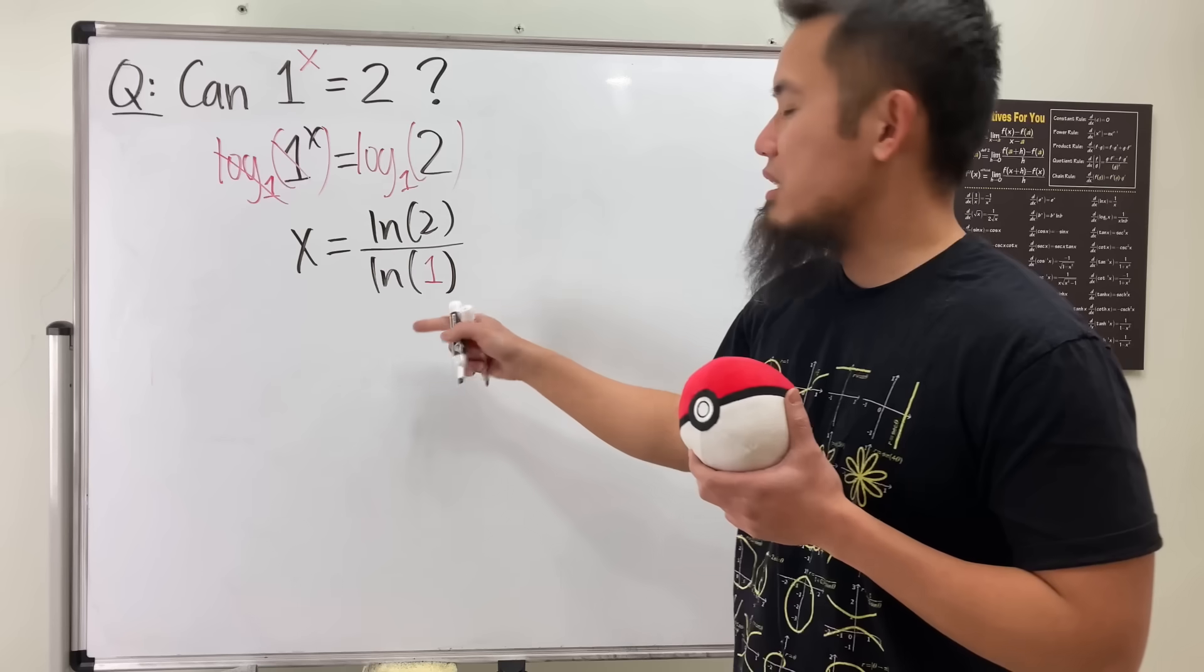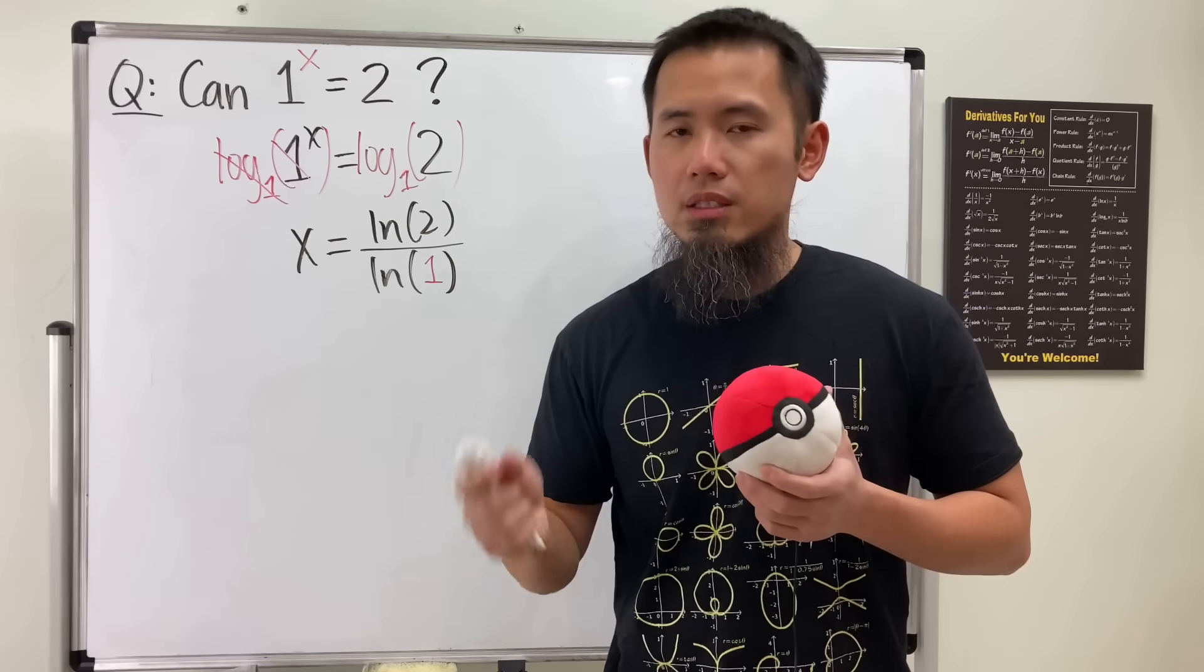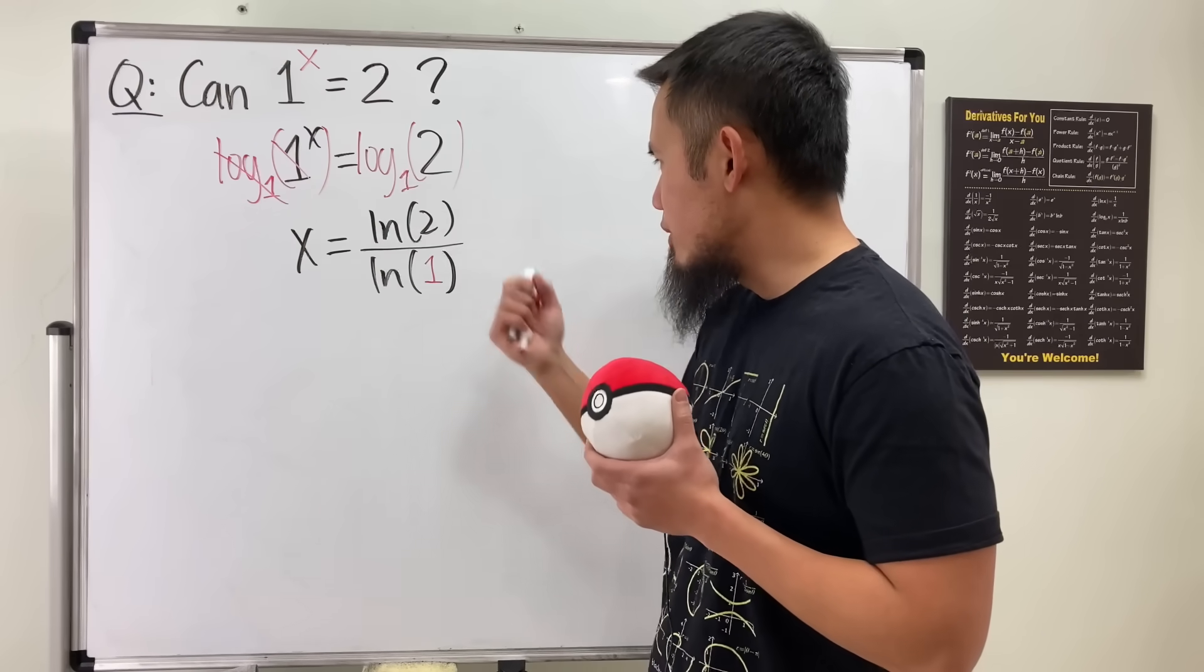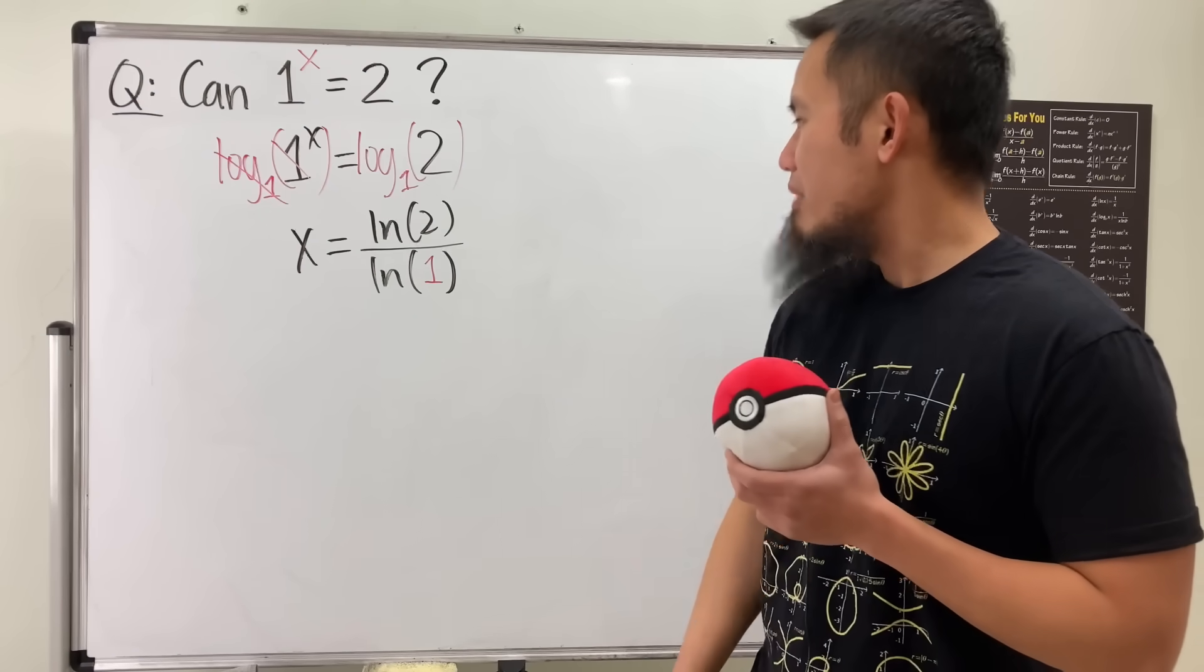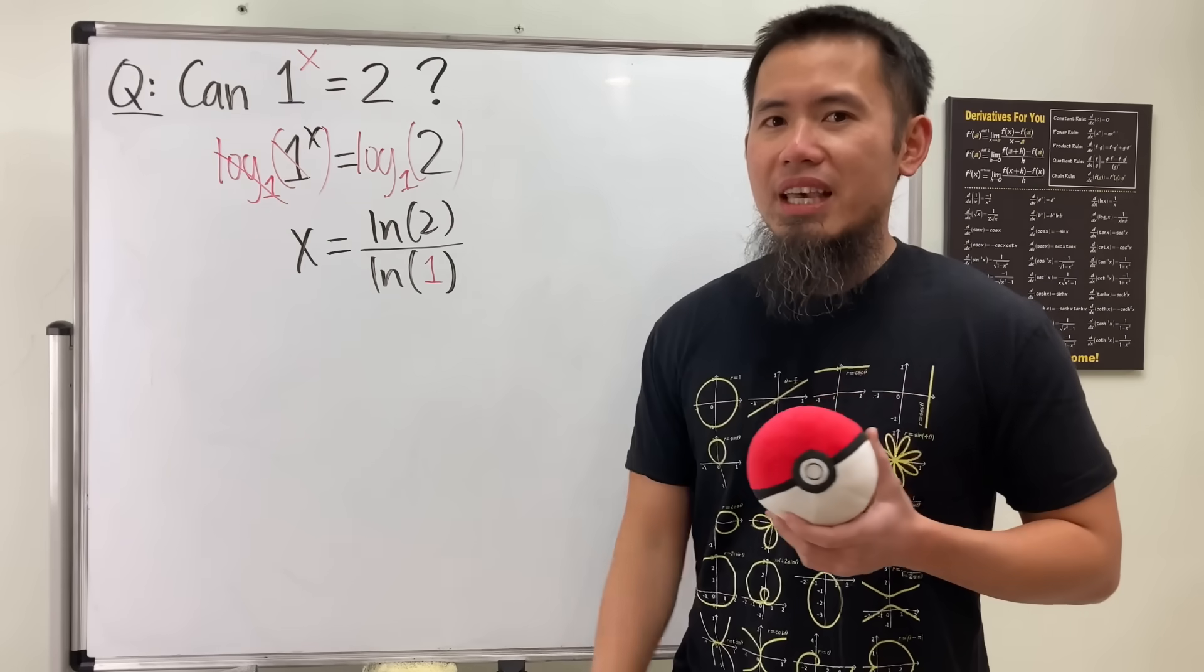And now, you might see it. Yes, ln 1 is 0. So we have ln 2 over 0. That's not defined. So maybe I just really cannot get a solution for this.